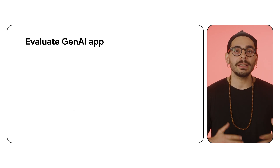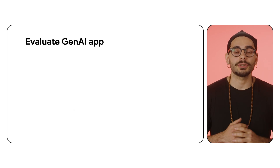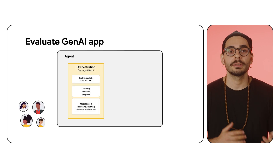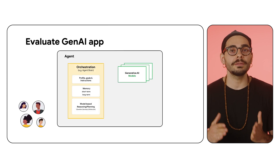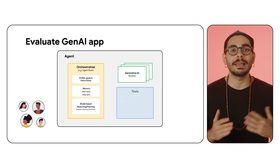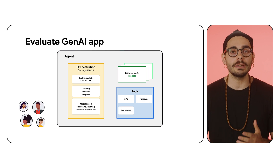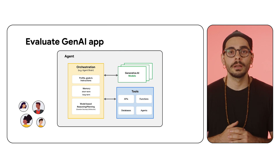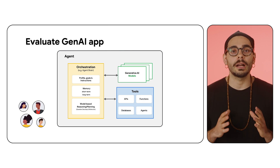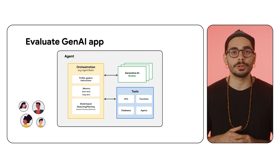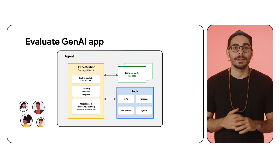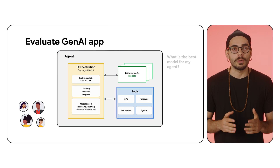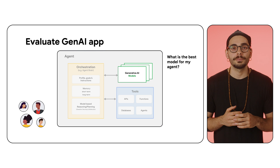Let's say you are building an agentic application. A user interacts with an agent that uses Generative AI models, APIs, databases — whatever it needs to get things done. Evaluating this requires a holistic approach. One key question we need to answer is: what's the best model for our agent?